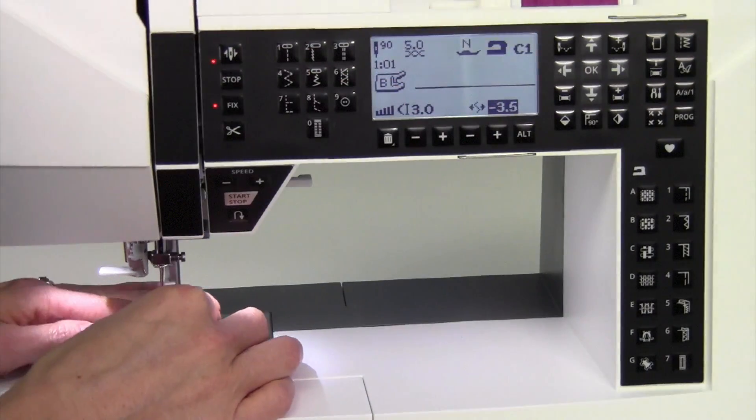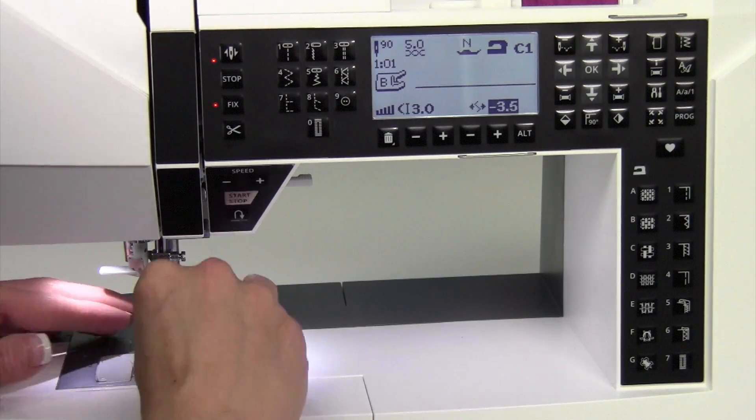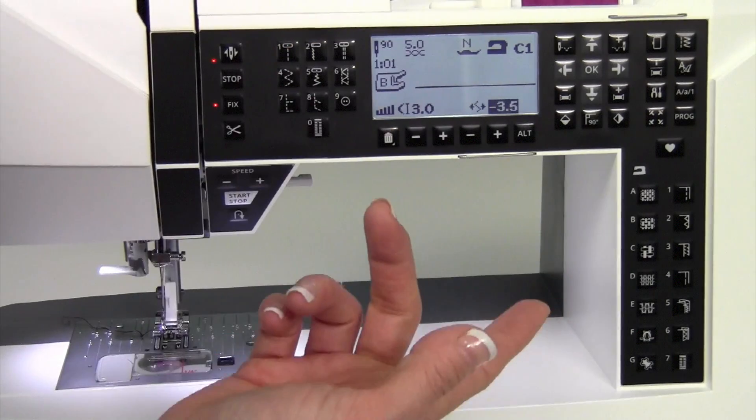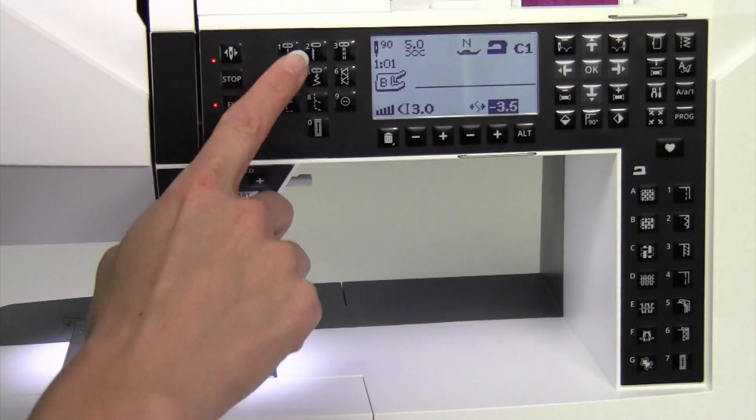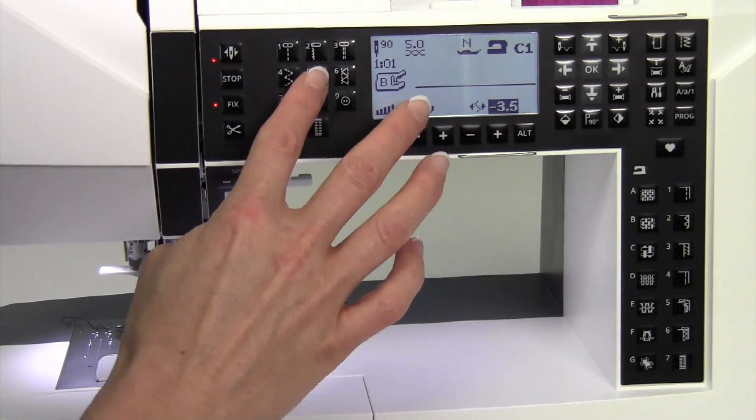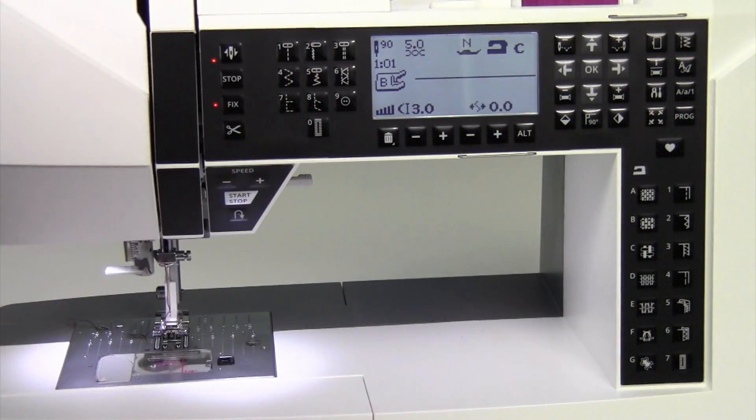All right, so that was just kind of like a little side note, little cheat part here. So I'm going to put the needle back in the center. So if I reselect stitch number one, I should go back to the center needle position. Oh, it's not. Okay, so we'll go to stitch five, then back to stitch one. Now it will.